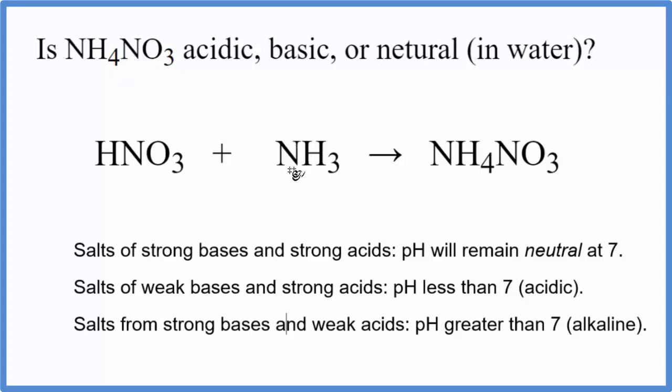To figure that out, we need to know the equation that created this ammonium nitrate. So we have HNO3, that's nitric acid, plus NH3 ammonia, and that gives us this salt, this NH4NO3 salt.